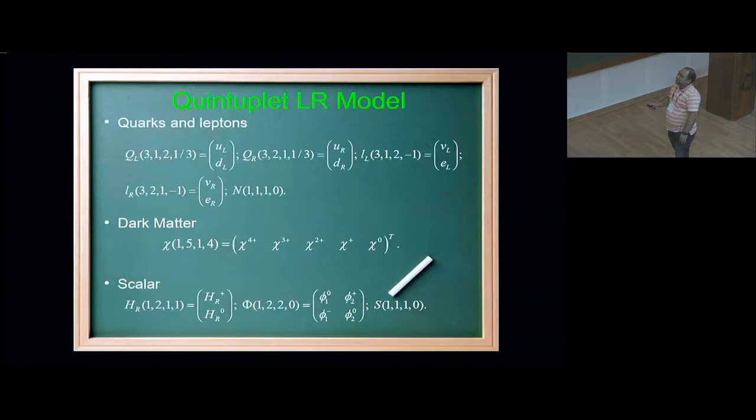Now let me talk about this quintuplet LR model. As I told you before, all my quarks and leptons are now doublets. So I have this left-handed doublet, right-handed doublet, similarly left-handed leptons doublet and right-handed leptons doublet. I have this right-handed neutrino built into the model, so I don't have to put it by hand.